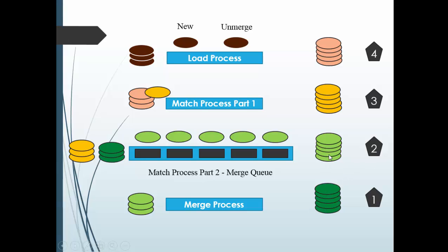To summarize: consolidation indicator 4 means the record is completely new or unmerged. When we start the match process, the consolidation indicator turns into 3. When records are put on the merge queue and are ready to merge, the consolidation indicator turns into 2. When we run the merge process and the record gets consolidated, the consolidation indicator turns into 1. A record with consolidation indicator 1 is called the golden record, consolidated record, or best version of truth.